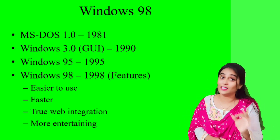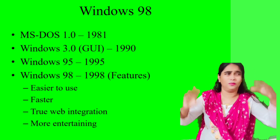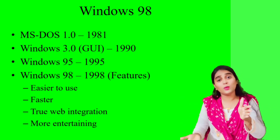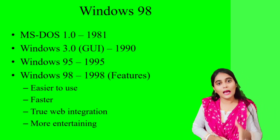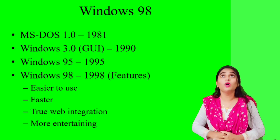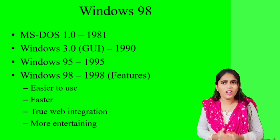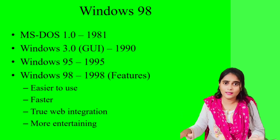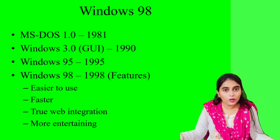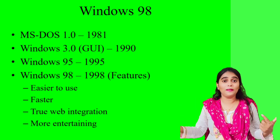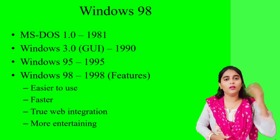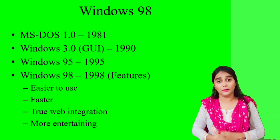The next feature of Windows 98 is that it is the fastest operating system of its time. It works with the FAT32 file transferring system, which helps save hard disk space. With a double-click of the mouse, you can access any folder or file quickly. That is why it had so much value in the market.